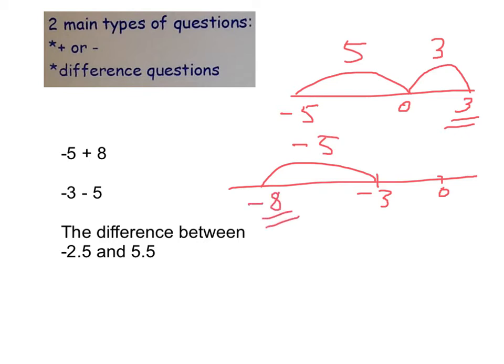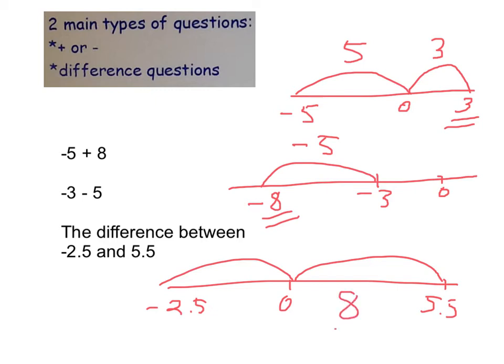And then finally, when I'm looking at the difference between -2.5 and 5.5, I need to think, well, the zero, obviously, there is in between, and the gap between -2.5 and zero is 2.5, and then to 5.5, it's another 5.5. So I need to add up those two jumps, essentially, getting me to my answer of 8.